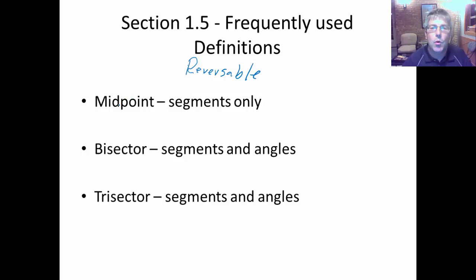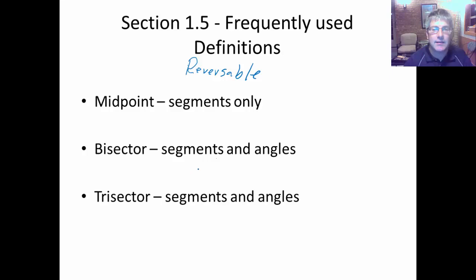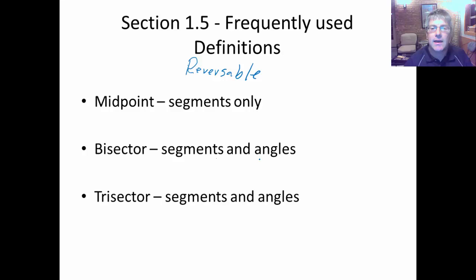Keep in mind that midpoints are only for segments. We don't take the midpoint of an angle. Whereas bisectors and trisectors can be for segments and angles — we can bisect an angle and get two congruent angles, or trisect an angle. If we're bisecting an angle, the conclusion is going to be congruent angles.